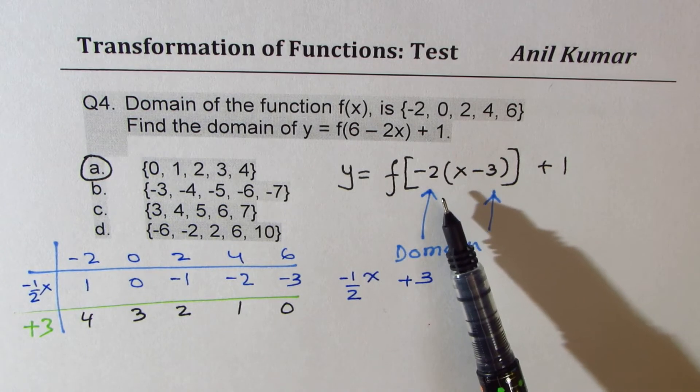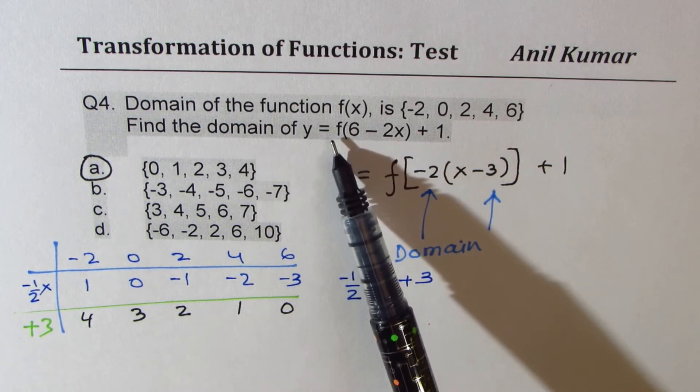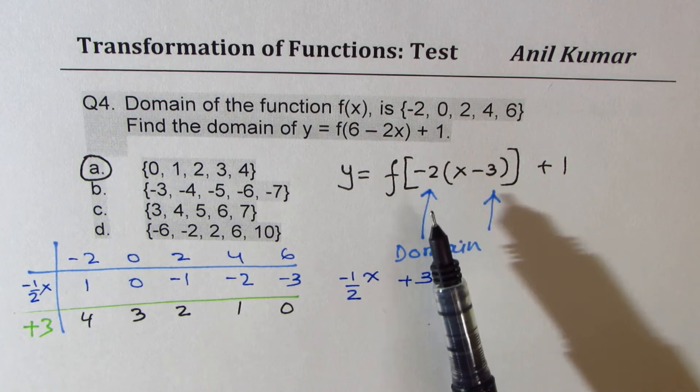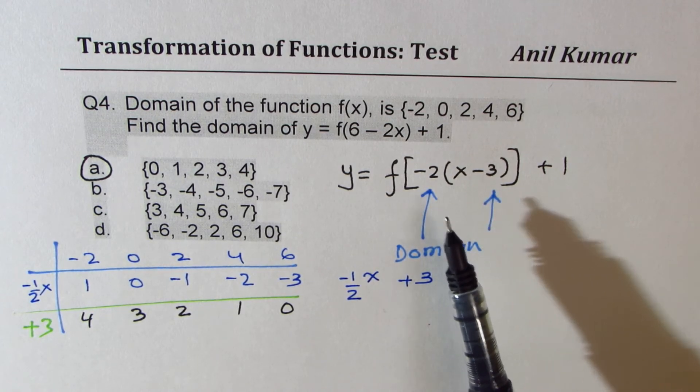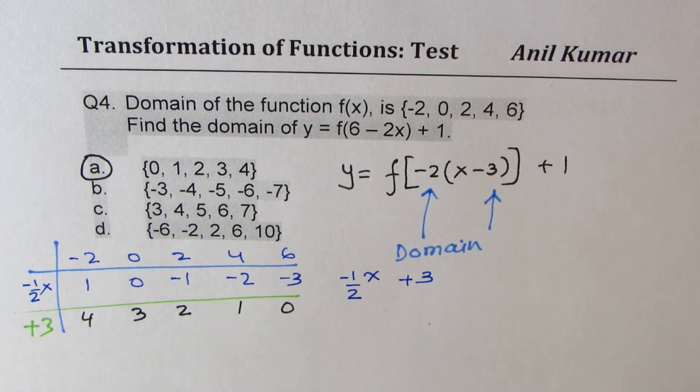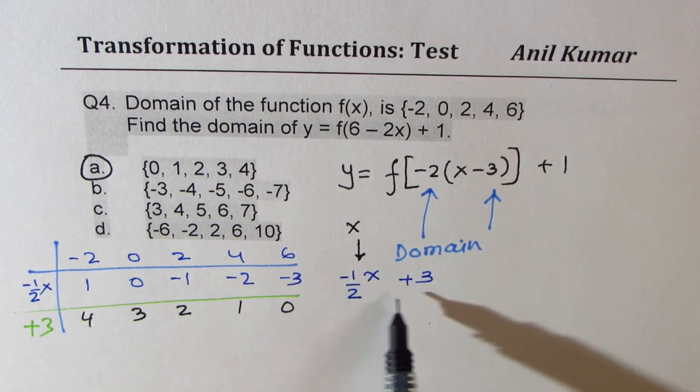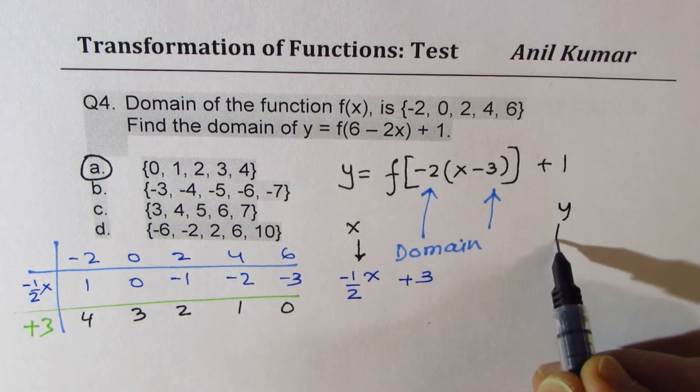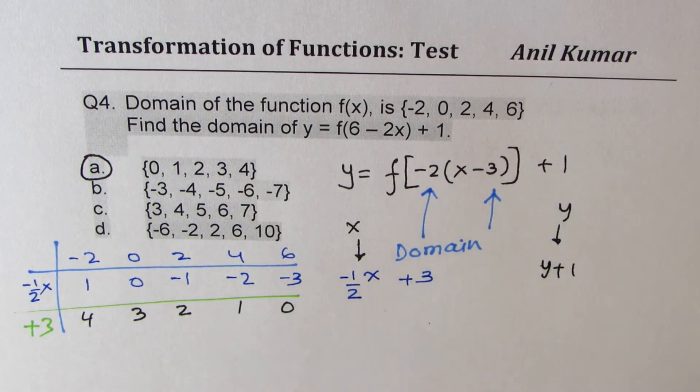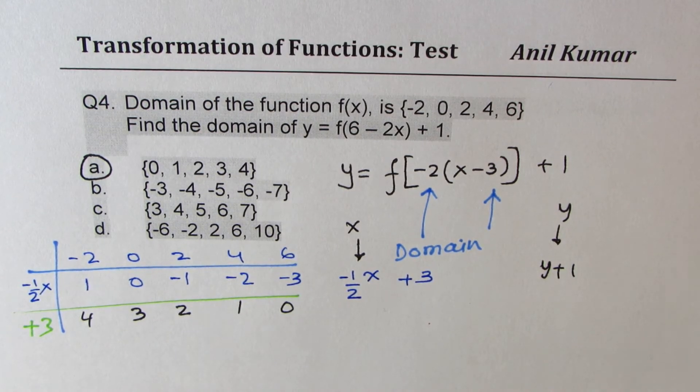So it's very important to follow the steps. First very critical step is rewrite the transformation so that you understand what exactly is to be done. And then translate the points using the transformation. So the x values are going to change to minus half x plus 3. The y values will actually become y plus 1. Since we are only interested in domain, we're looking into the x values only. I hope that is absolutely clear.